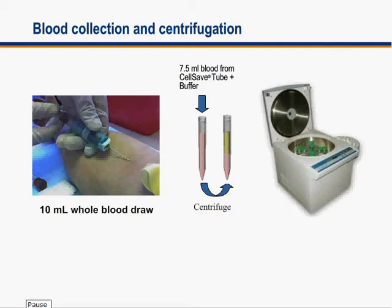10 milliliters of blood are withdrawn from a patient with metastatic cancer. Usually it starts before a new treatment will be administered — this is the baseline. Then, after the treatment has been started, another sample is taken, and then in three or four weeks another, and so on. Only 7.5 mL of blood are used from this sample.